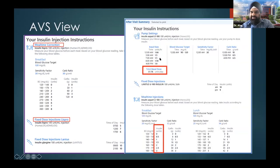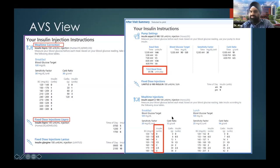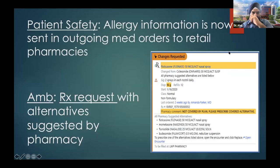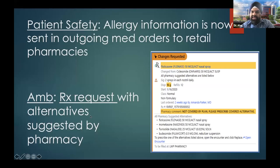For the pump, a person gets all the details including basal rate, sensitivity, and changes in half-unit increments. Regarding smart phrases and smart lists — providers can combine all dot phrases into a user smart list, putting all note templates in one place rather than having to find them individually. This can also be set up at an SDS session. For patient safety, allergy information has started going out in outgoing medication orders to retail pharmacy, keeping pharmacy records up to date. Additionally, when pharmacy sends a prescription request to ambulatory partners, it also sends alternatives suggested by the pharmacy based on patient coverage.